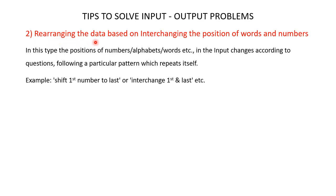Let's now understand how data is rearranged based on interchanging the position of words and numbers. In this type, the position of numbers, alphabets, or words in the input changes according to a particular pattern which repeats itself. For example, it may be: shift first number to the last, or interchange first and last words or numbers, etc. Let's understand this method with the help of an example.